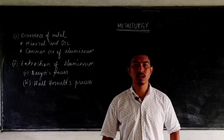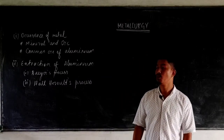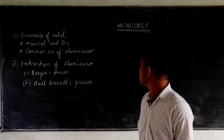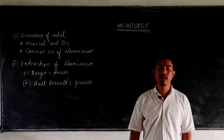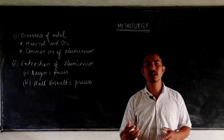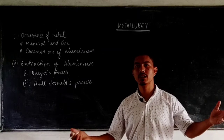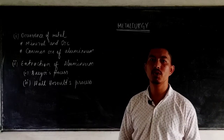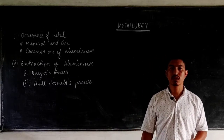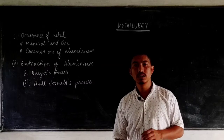Hello, my dear students. Once again, welcome to your online class. In today's video, we will be discussing the seventh chapter of your chemistry textbook, that is metallurgy. Metallurgy is the complete process of extraction of a metal from the mineral to finally a pure form of the metal. All the processes involved in the extraction of metal are termed as metallurgy.